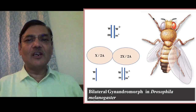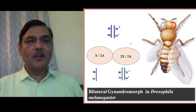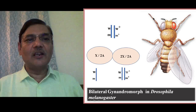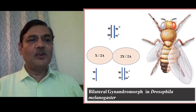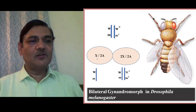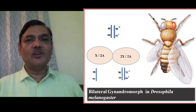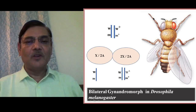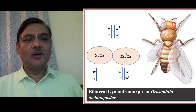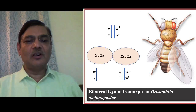The entire development proceeded from these two cell types. One half of the individual possessed two X chromosomes: with two sets of autosomes, the ratio is 2/2 = 1, so the right side developed into female structure with red eye color and normal long wings. The other half received only a single X chromosome carrying the w allele, giving ratio 1/2 = 0.5, so it developed into male features with white eye color and miniature wings due to the m allele. This is how bilateral gynandromorphs are formed in Drosophila melanogaster.